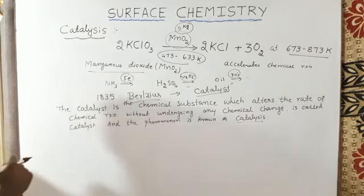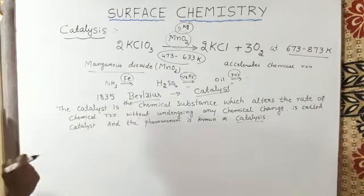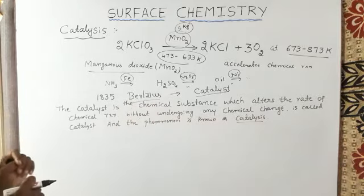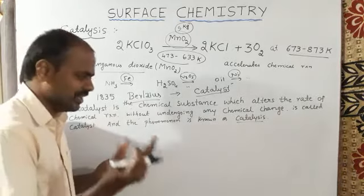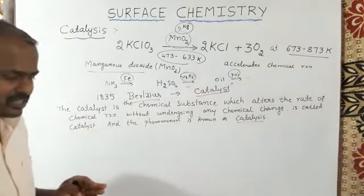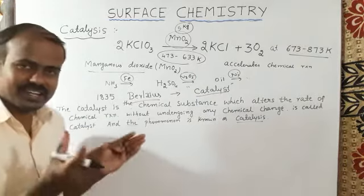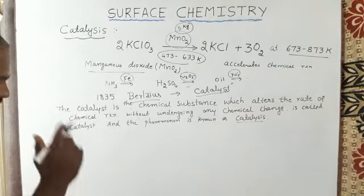Catalysts can be of two types: positive catalyst, which can increase the rate of the reaction, and negative catalyst, which can decrease the rate of the reaction.